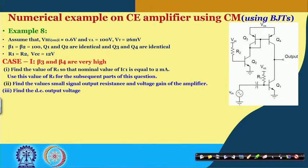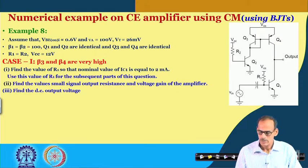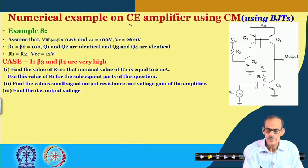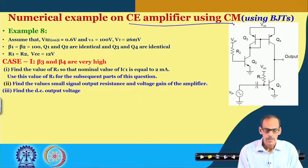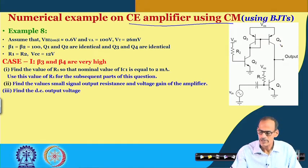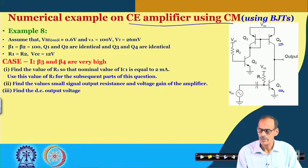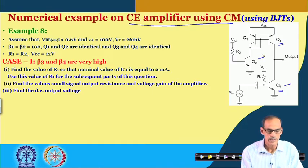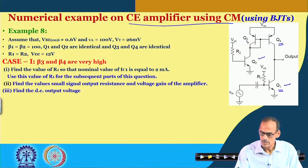Dear students, welcome back after the break. We are going through different numerical examples, and now we are going to talk about one common emitter amplifier which is using a current mirror — particularly to bias the active load Q4. Transistor Q1 is the amplifying device, and we are assuming that Q1 and Q2 are identical, and also that Q3 and Q4 are identical.